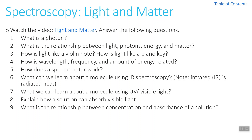From IR spectroscopy we can learn about structure — what atoms are bound together and what groups are present. Using ultraviolet and visible light, we can learn about electronic structure. A solution can absorb visible light if it contains a colored solute. The relationship between concentration and absorbance: the higher the concentration of particles, the more photons of a particular wavelength will be absorbed.